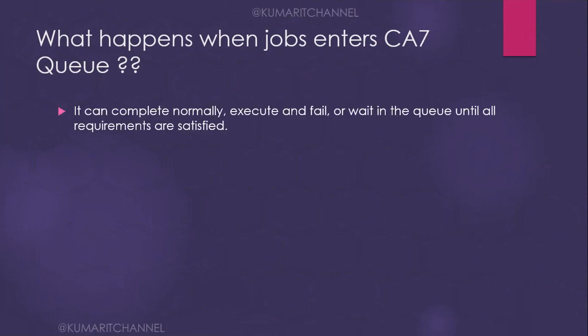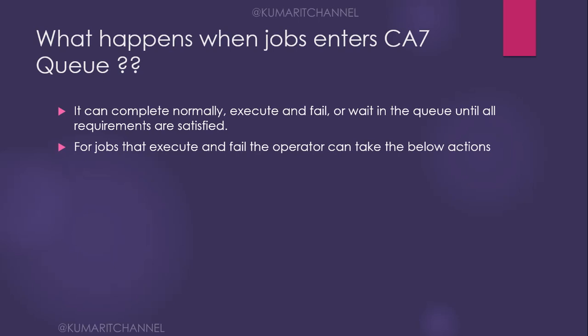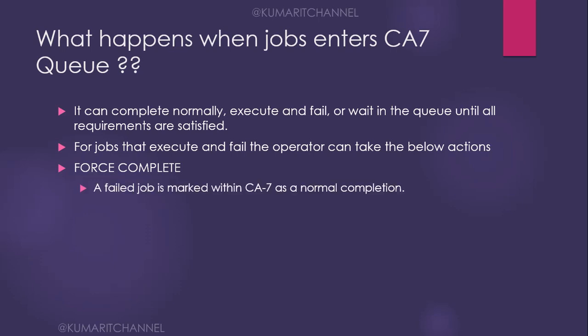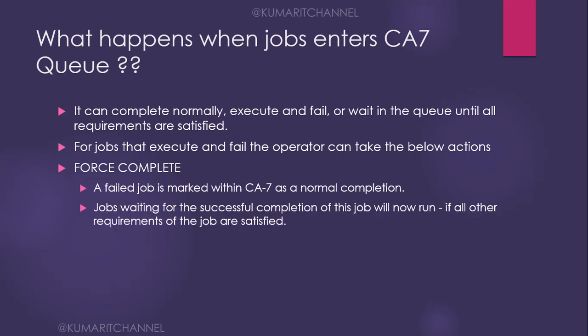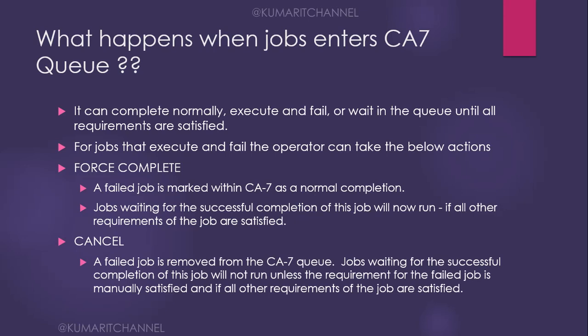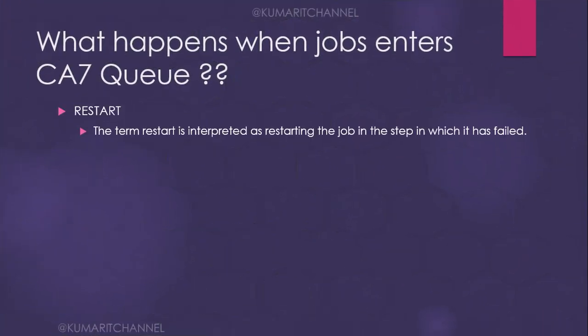When jobs enter the CA7 queue, they can complete normally, execute and fail, or wait in the queue until all requirements are satisfied. For jobs that execute and fail, the CA7 operator can take actions. One option is force complete — a failed job is marked within CA7 as a normal completion, and any job waiting for its successful completion will run if all other requirements are satisfied. Another option is cancel — if you've been waiting too long, you can cancel that particular job.